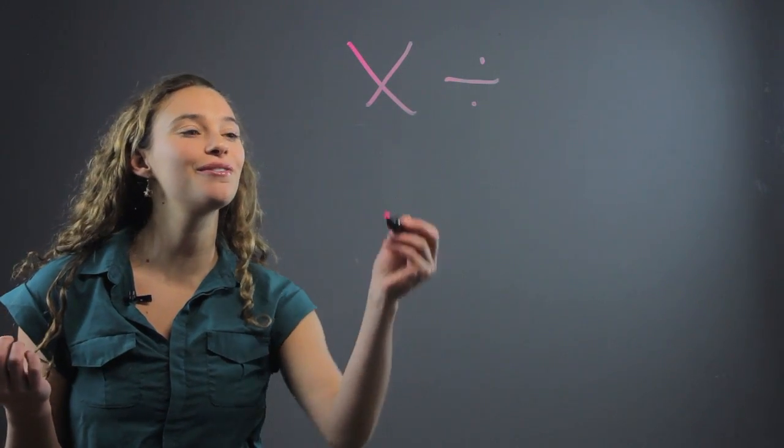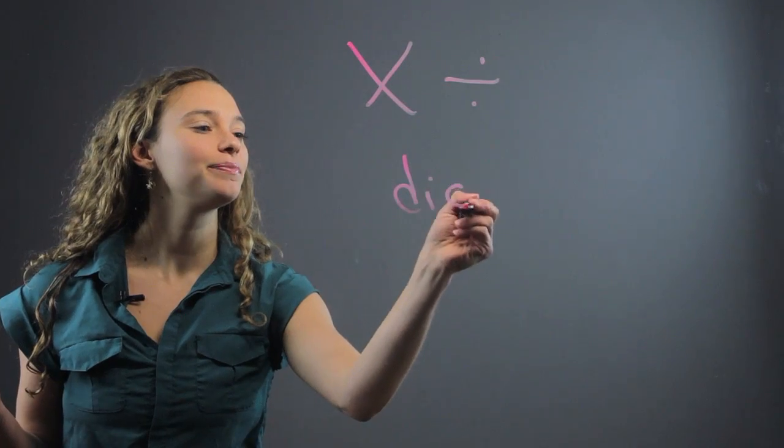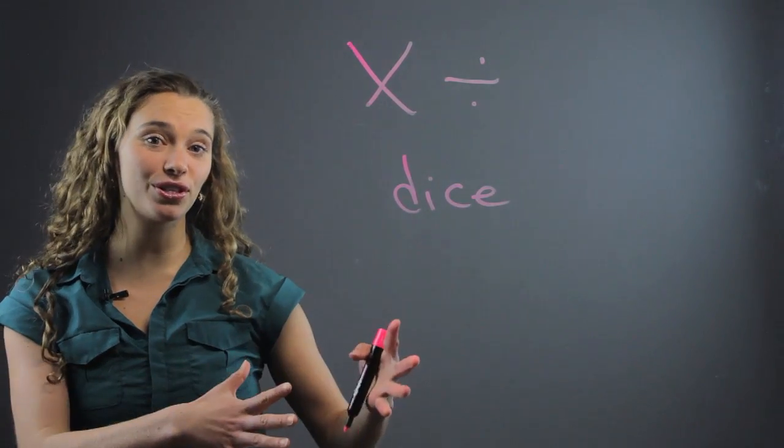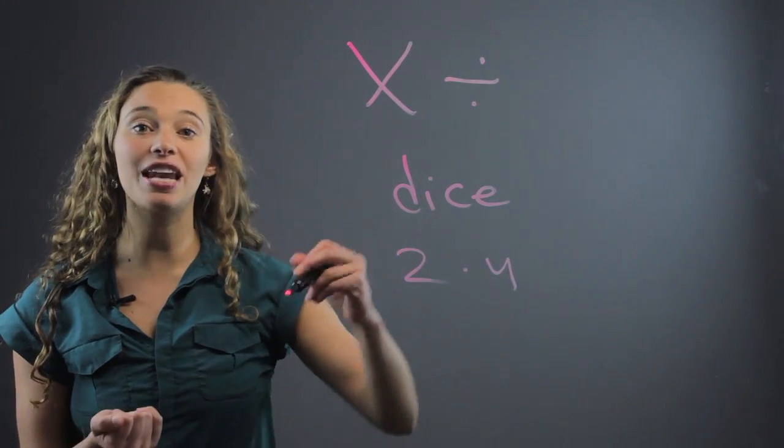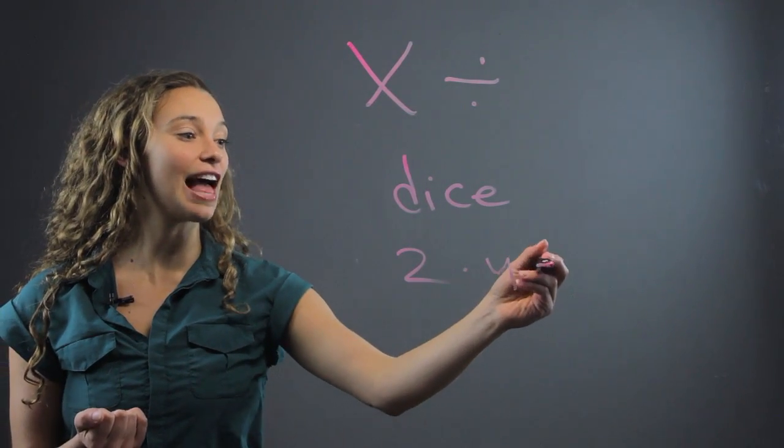But there's also lots of fun things you can do with things like dice. You can have the students roll two dice, and let's say they get a two and a four. You can have them multiply those numbers together, so that gives them eight.